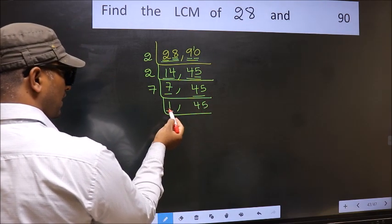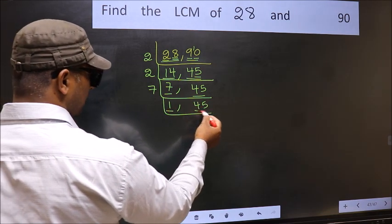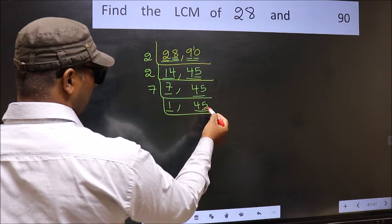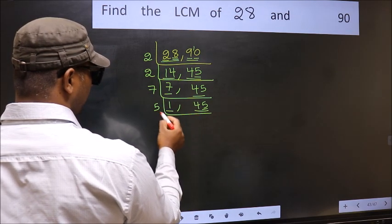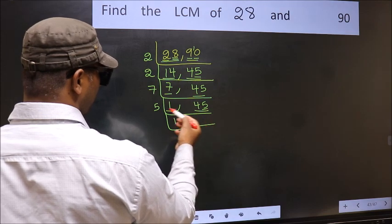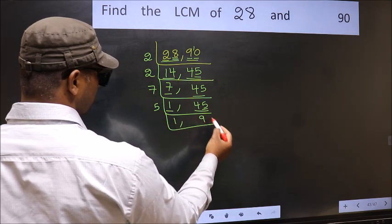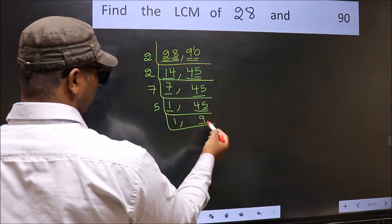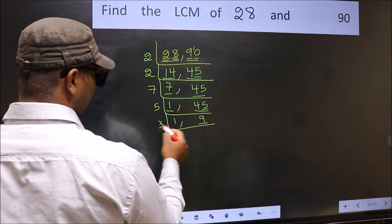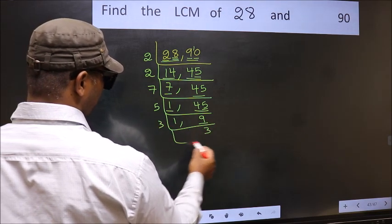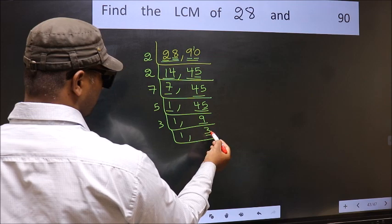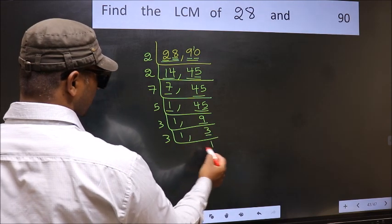Now we got 1 here, so focus on the other number 45. Last digit 5, so take 5 here. When do we get 45 in 5 table? 5, 9 is 45. Now here we have 9, 9 is 3, 3 is 9. Now we have 3, 3 is a prime number, so 3, 1 is 3.